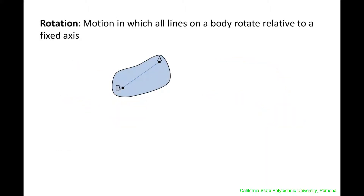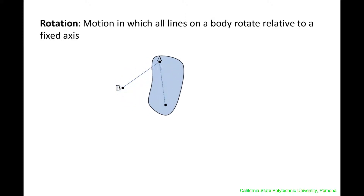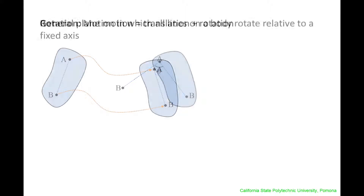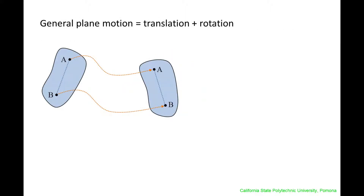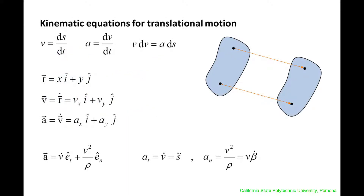The second type of motion is rotational. A rigid body undergoes rotational motion if all particles move in circular paths about an axis of rotation. In general, rigid bodies may undergo both translational motion and rotational motion. As mentioned earlier, the kinematic equations for a single particle can describe the motion of a rigid body undergoing purely translational motion. Now let's derive the equations that describe rotational motion.